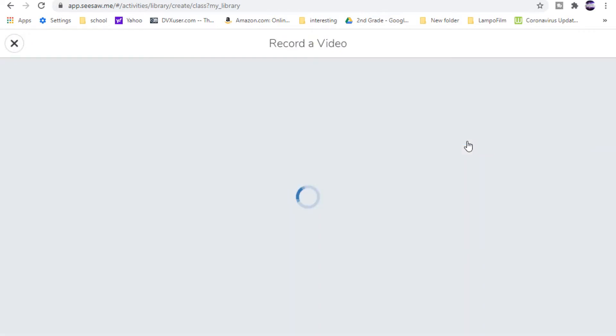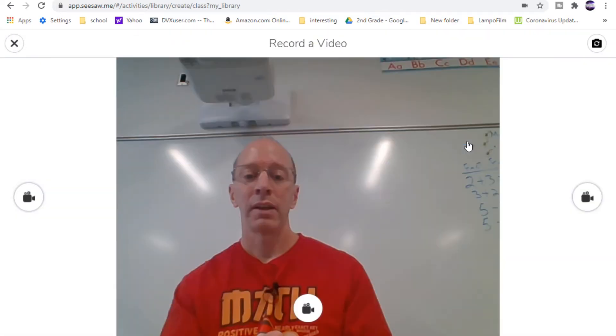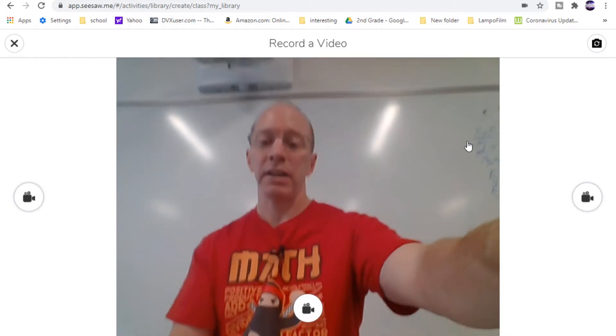So I want to use my document camera and the cool thing about this is that you can switch back and forth but you don't click on these, these are the record buttons.